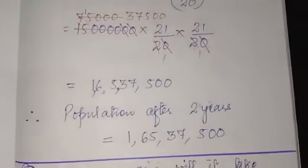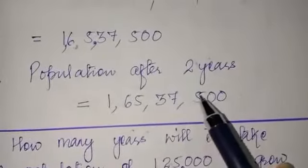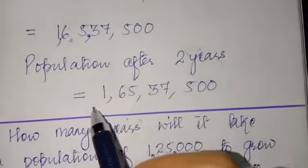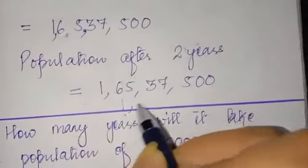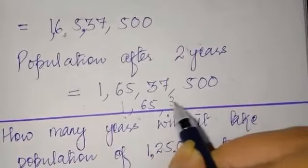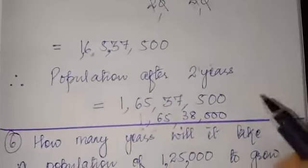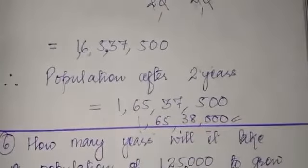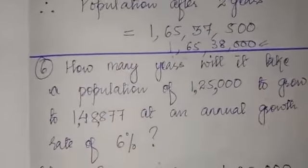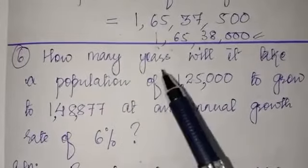The question asks to write the answer to the nearest thousand. Here we have 37,500 — because of the 5, it rounds up to 38,000. So the population after two years, to the nearest thousand, is 1 crore 65 lakh 38 thousand.